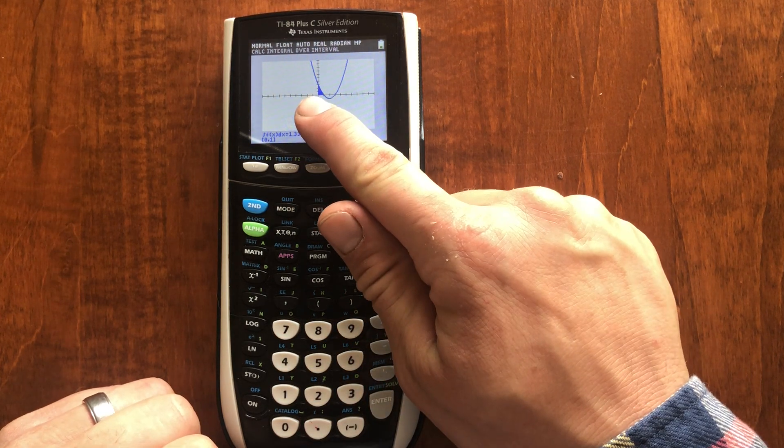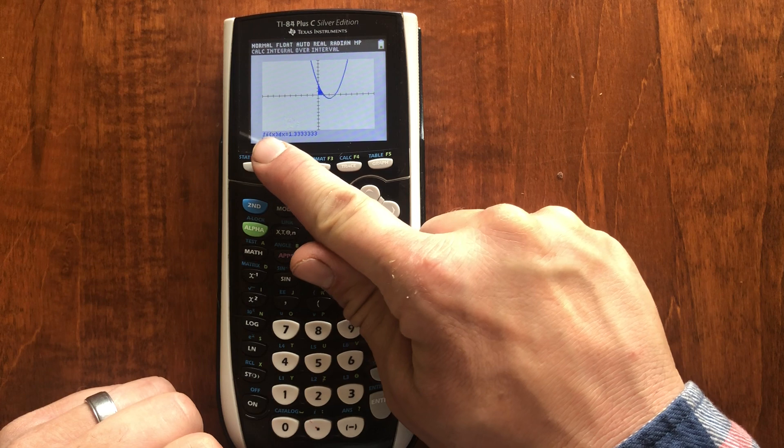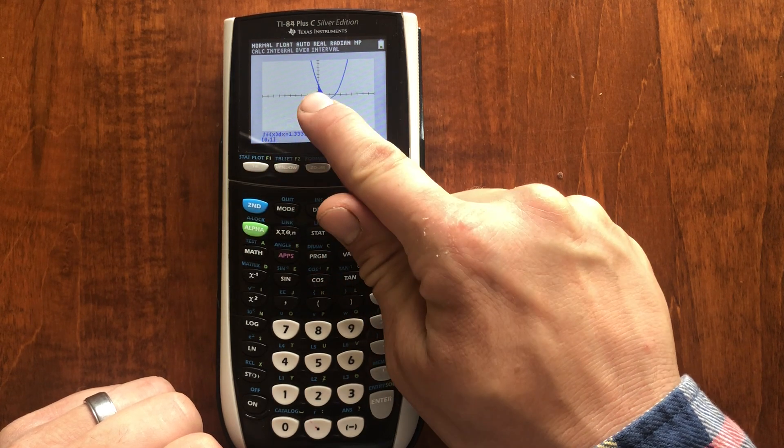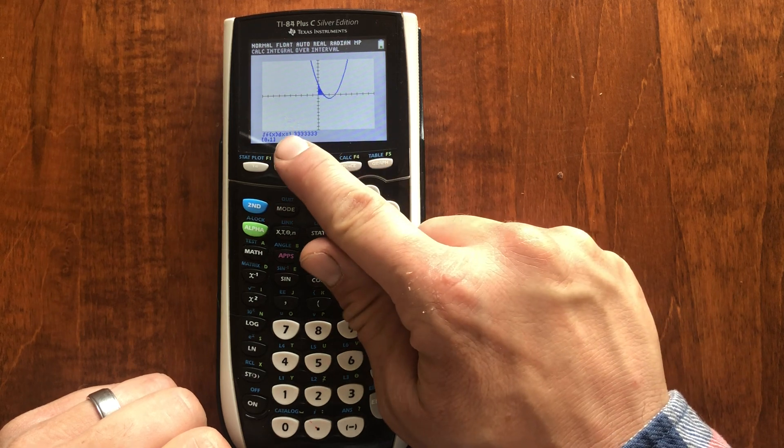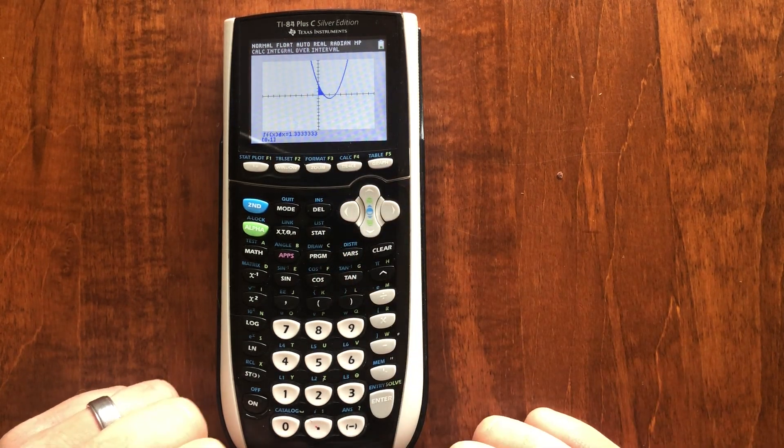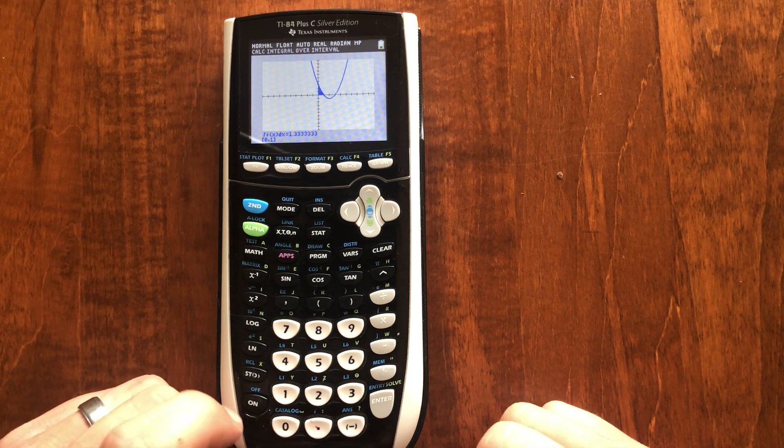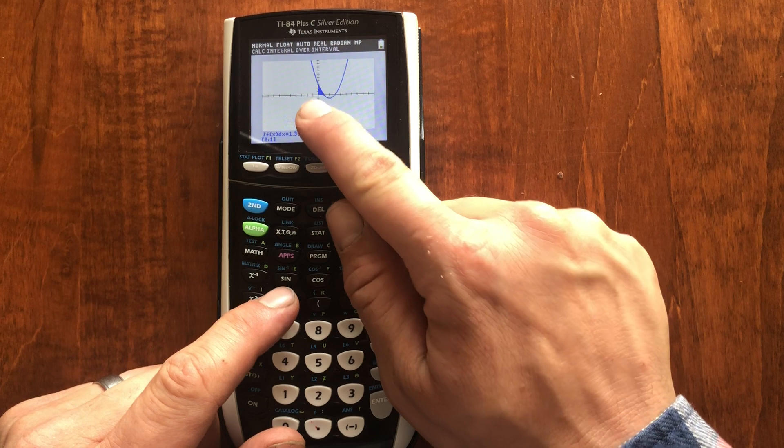It fills in that whole spot there and tells me the area. The area of f(x)dx between zero and one underneath this curve is 1.333 or four-thirds. We could do that by hand very easily as well. But let's continue playing with this. What if I integrate further?